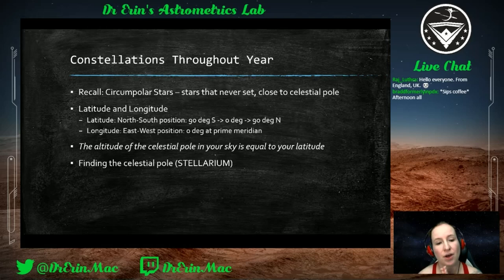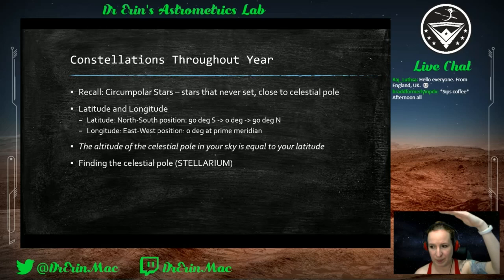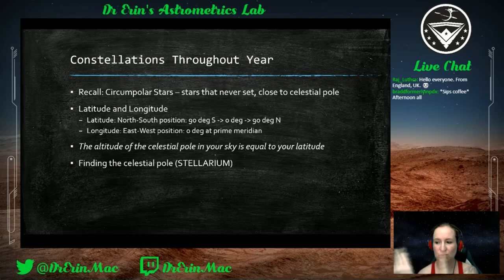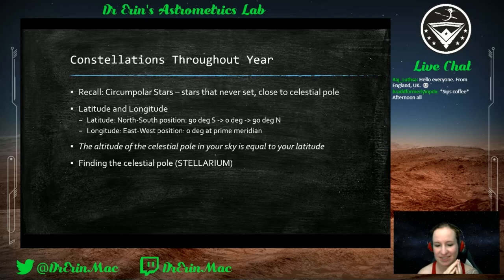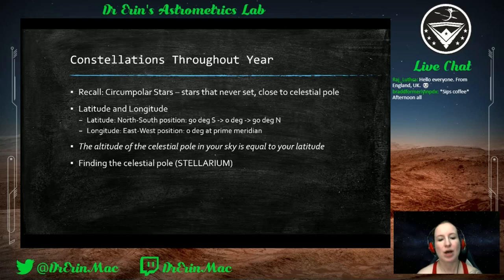Latitude is zero degrees at the equator, going up to 90 degrees north or 90 degrees south. Longitude is your east-west position, starting at zero degrees — the prime meridian. As Raj mentioned, he's in the UK, and that's where the prime meridian is. Because the United Kingdom is situated there, zero degrees — the prime meridian — runs through it.